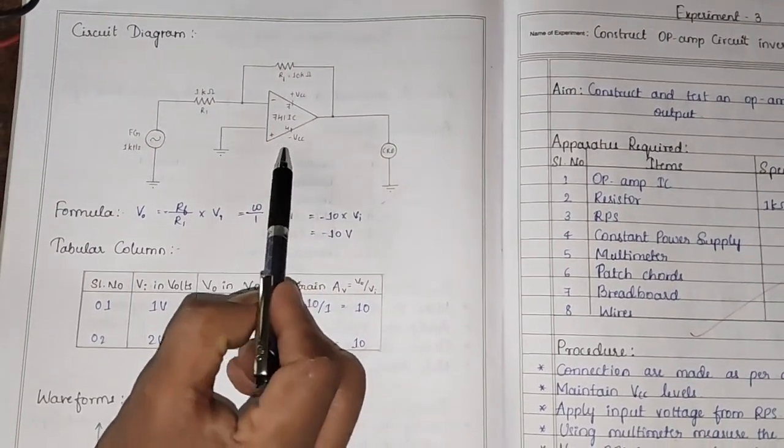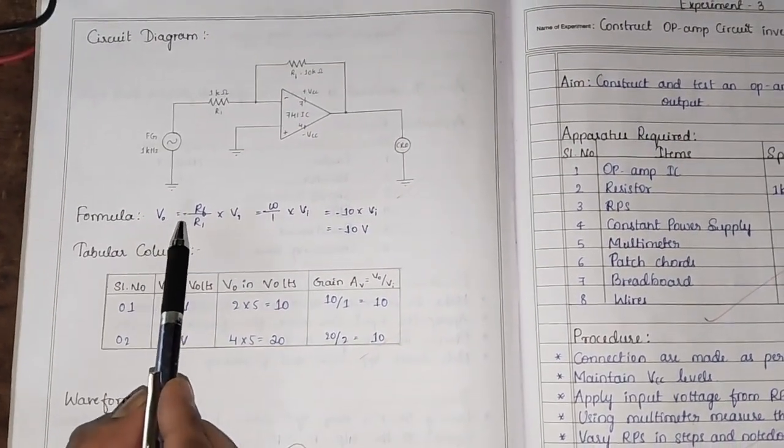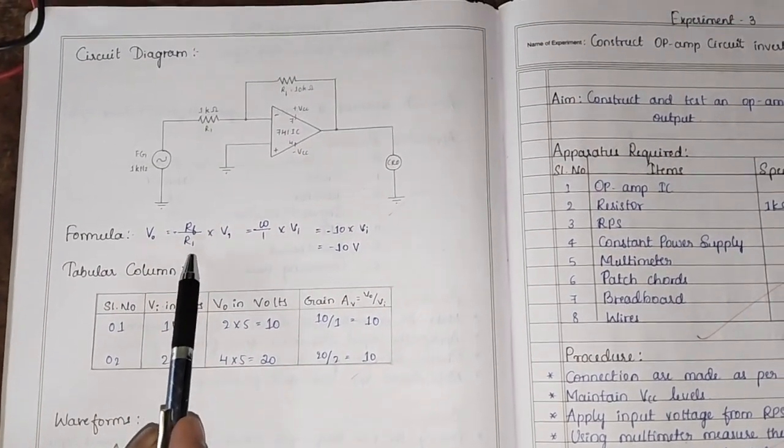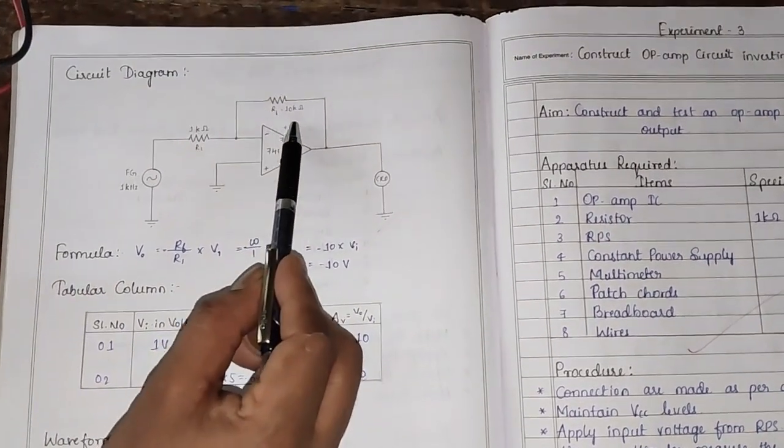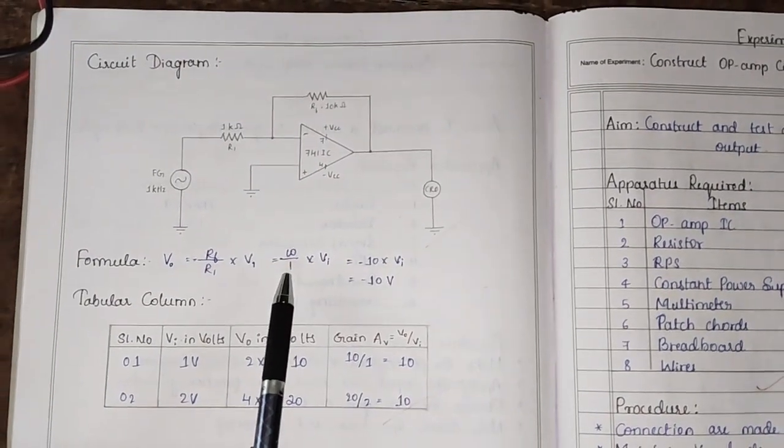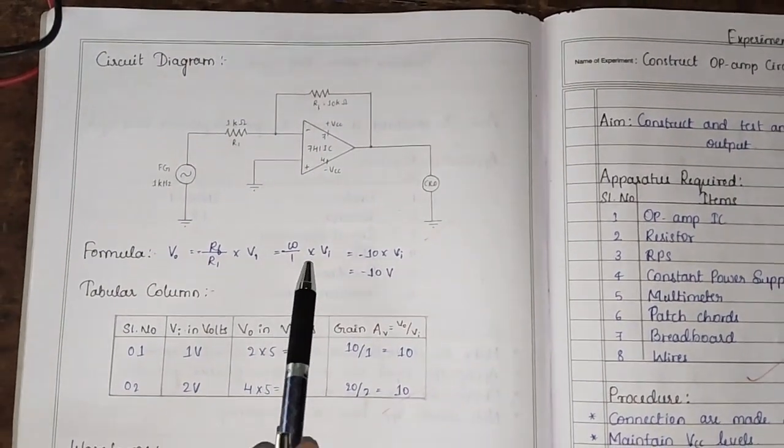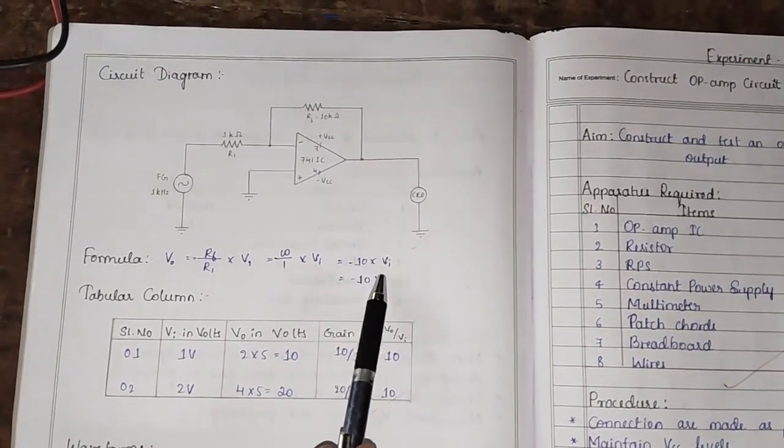This is inverting amplifier. Its output voltage formula is given as minus Rf divided by R1 into V1. Here the Rf is 10 kilo ohm and R1 is 1 kilo ohm therefore the gain is 10, which gives minus 10 into Vi.